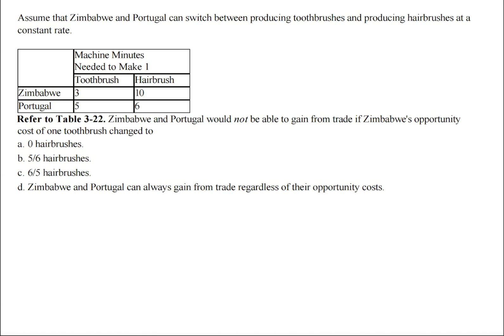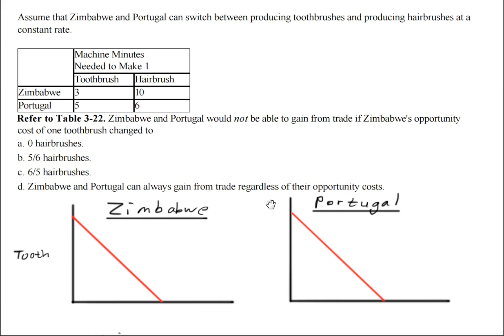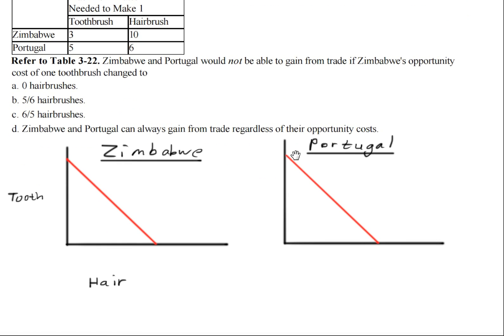So the question asks: Zimbabwe and Portugal would not be able to gain from trade if Zimbabwe's opportunity cost of one toothbrush changed to? So in order to figure out this question, we need to construct two production possibilities frontier curves. And right here, I have drawn it for Zimbabwe and Portugal.